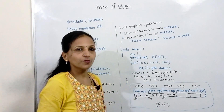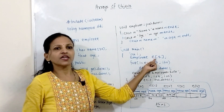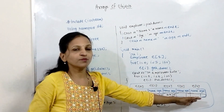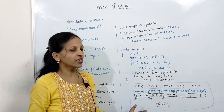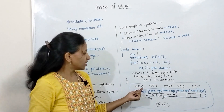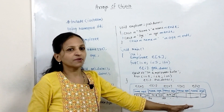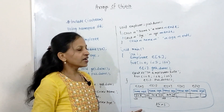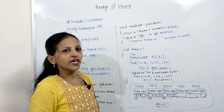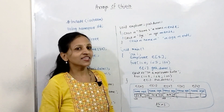An array of objects is nothing but a group of objects. We create it using: class_name array_name[size]. All individual objects are stored contiguously in memory and accessed using an index — e[0] is the first object, up to e[size-1]. We can manipulate the array using a for loop. In the next session, we will see object as a function argument.